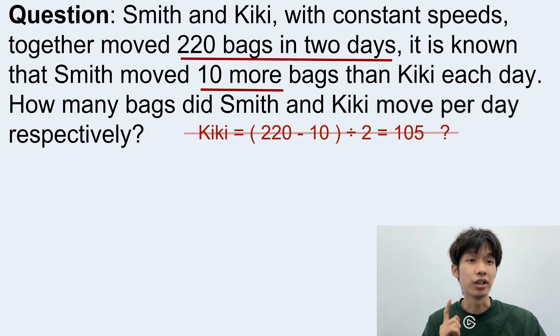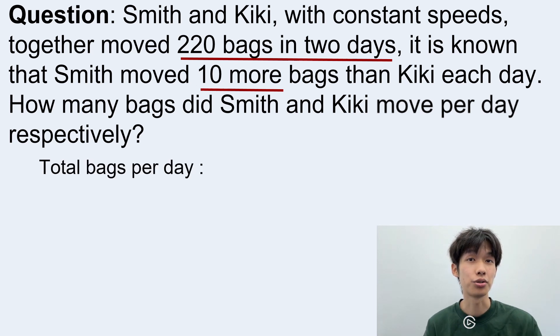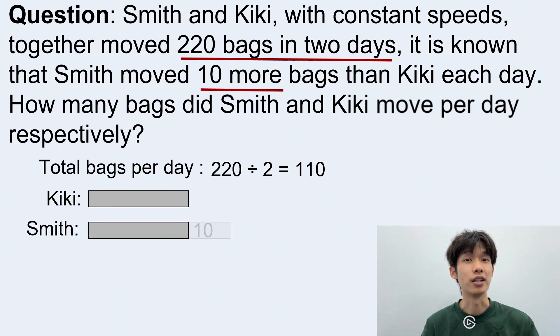So in order to do it, we need to transfer the two days into one day. And we can find the total bags moved per day equals to 110. And from here, let's try to draw a model from it. Starting with the Kiki speed, we have this. And if we are trying to draw Smith's speed, we need to draw 10 more than Kiki's speed. And they have total speed of 110 bags per day.